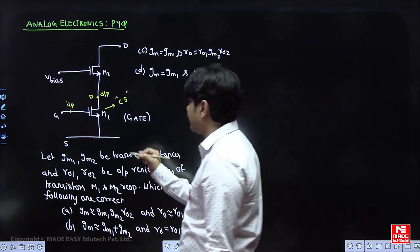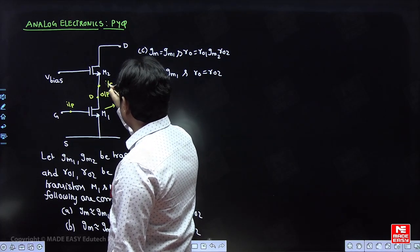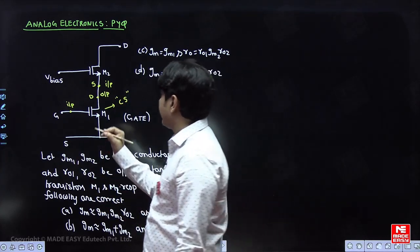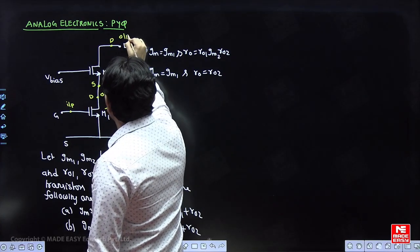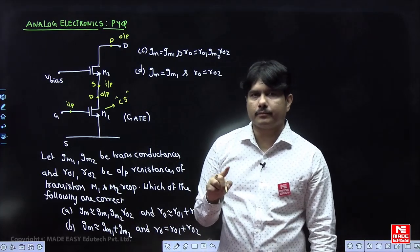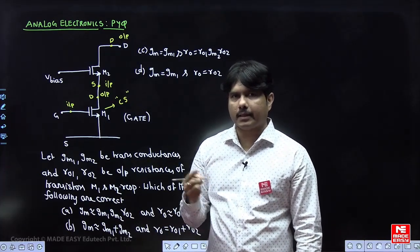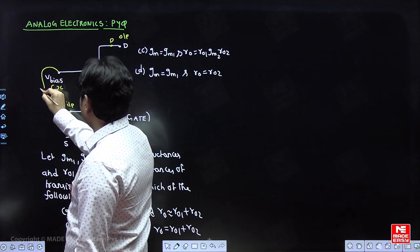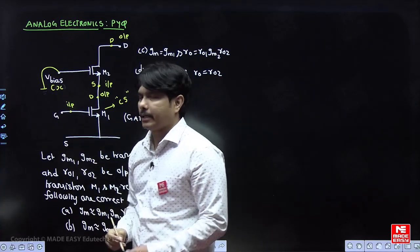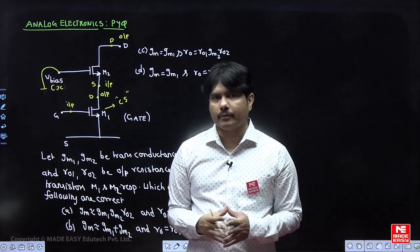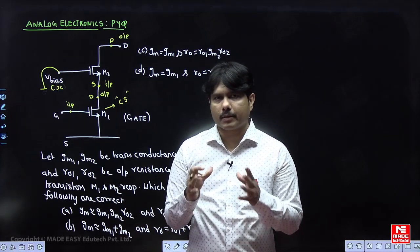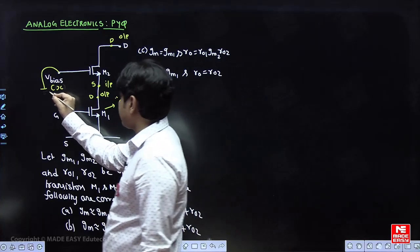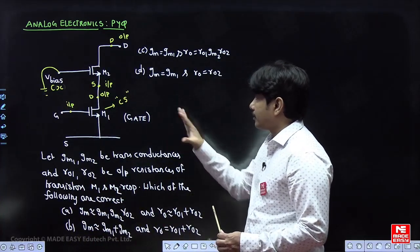For the next transistor, the input is taken from the source and the output is taken from the drain. Whenever the source is the input and the output is the drain, then the gate becomes common. In AC analysis, the DC biasing voltage V_bias becomes automatically ground. So the gate is grounded in AC analysis — V_bias is grounded because we are talking about output resistance, which is an AC parameter. For AC analysis, DC should be grounded, so assume this node is ground.